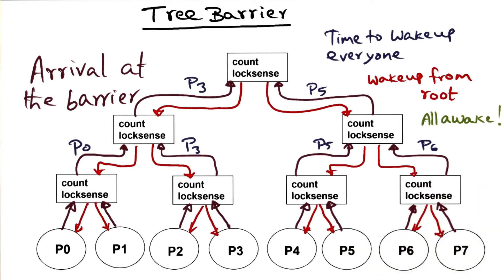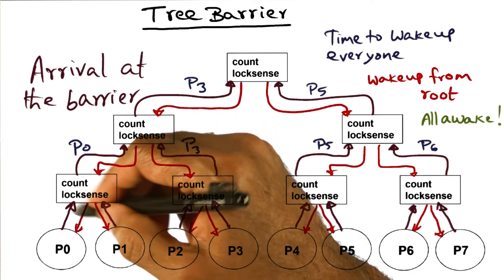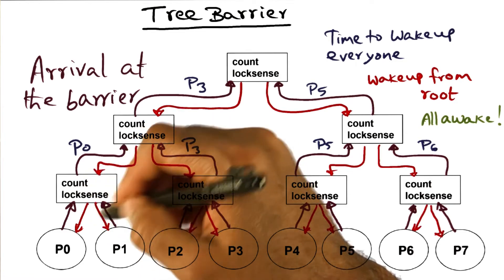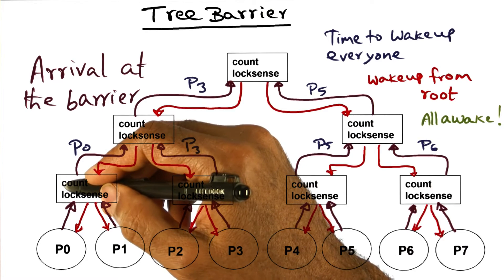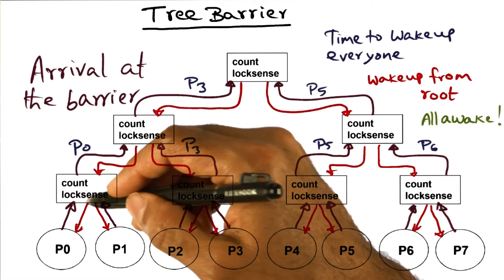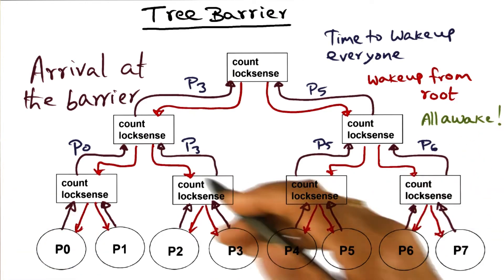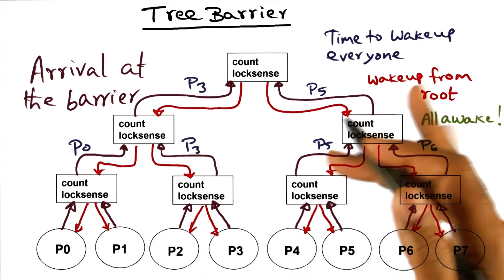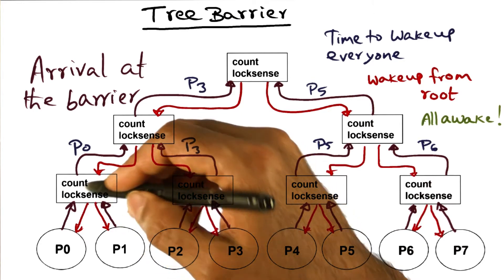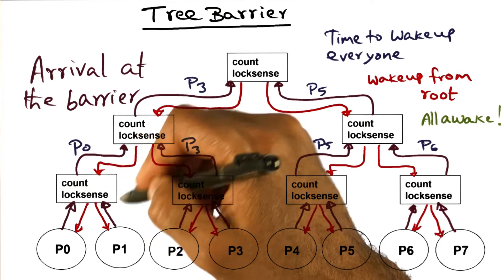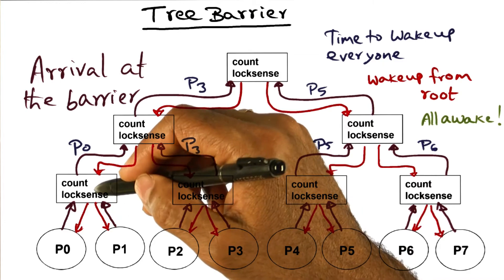The second source of problem is that the arity of the tree determines the amount of contention for shared variables. Here it is shown with two processors, but if you increase the arity K to something more than two — maybe four or eight — and if you have a large-scale multiprocessor with a thousand processors, the arity of the tree may be much more than two. In that case, the amount of contention for shared data structures is going to be significant, and that can result in more contention on the network as well.